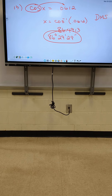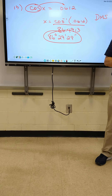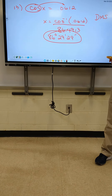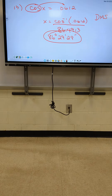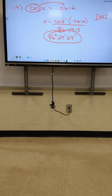Let's do it again — I'll make it easier. Type in cosine negative 1 of 0.0612 and hit enter. Now go back and hit second angle. Instead of scrolling down this time, just hit number 6 in your calculator and it goes straight to DMS. Then hit enter and it gives you the answer.